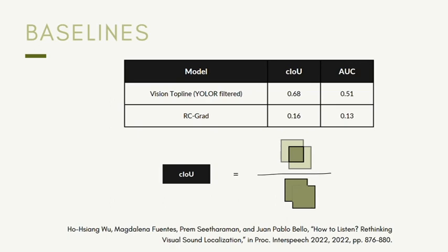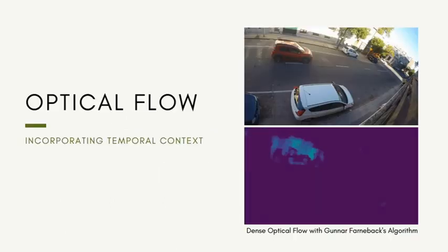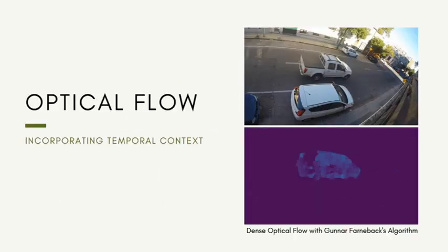Our performance metric is what is standard in the literature: the intersection over union of the prediction and the ground truth. We use optical flow to encode motion information. Optical flow measures the pixel-wise movement given consecutive frames of a video, and we try following three ways of incorporating it into the RCGRAD framework.